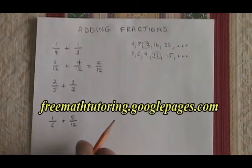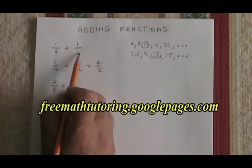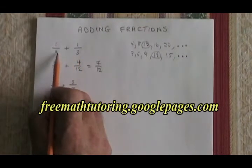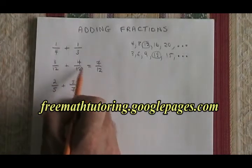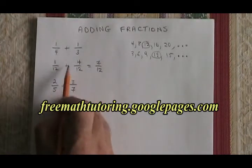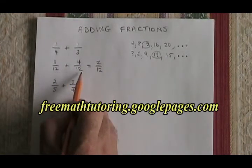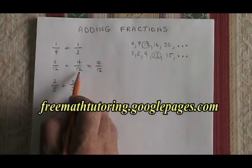There is a possible shortcut. If you notice that 4 times 3 is 12, then you can see that multiplying the denominators of the fractions you started with gives you a common denominator. And in this case it would happen to have given you the lowest common denominator, but it's not always going to be the lowest.